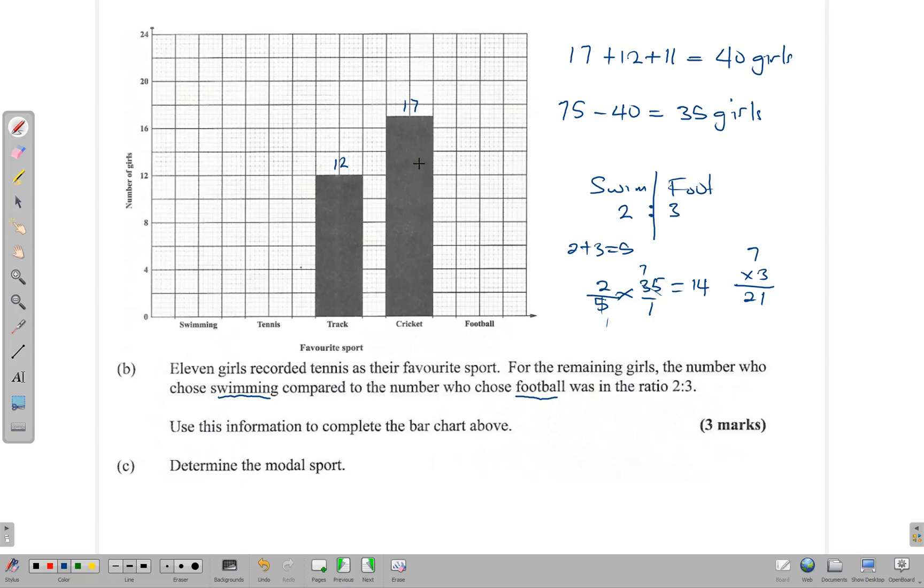So if we write them out: cricket is 17, track is 12, tennis is 11, swimming is 14, and football is 21. It says use this information to complete the bar chart above, so let us draw the bar chart.